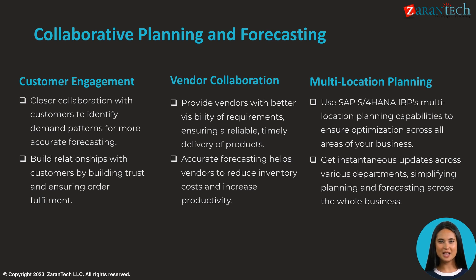Collaborative planning and forecasting is another key capability. Closer customer engagement helps identify demand patterns for more accurate forecasting and builds trusted relationships. Vendor collaboration provides supply chain visibility for on-time, reliable delivery of products. Multi-location planning ensures optimization across departments and geographies using instantaneous updates.